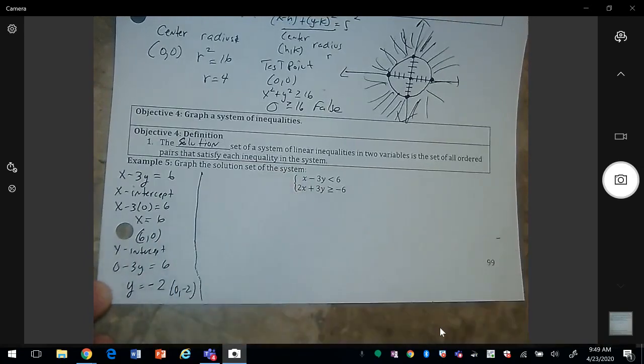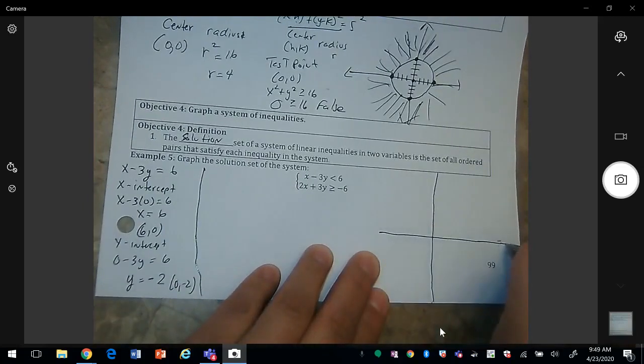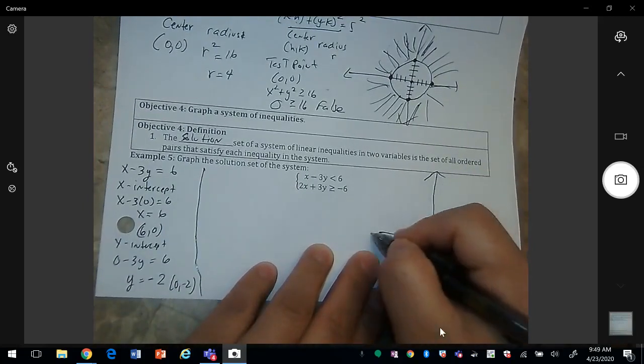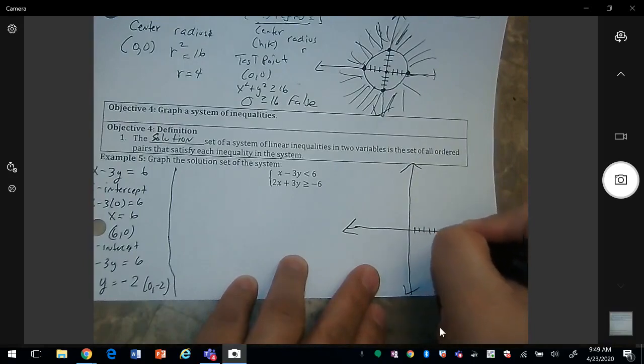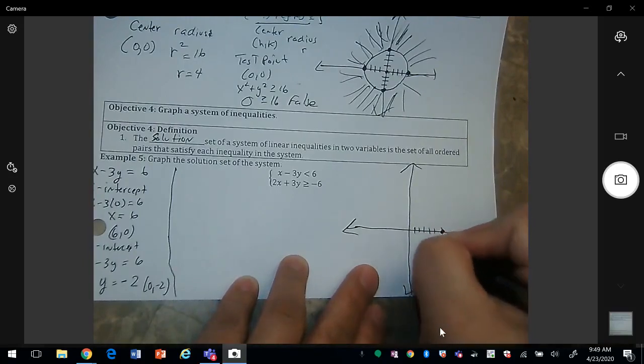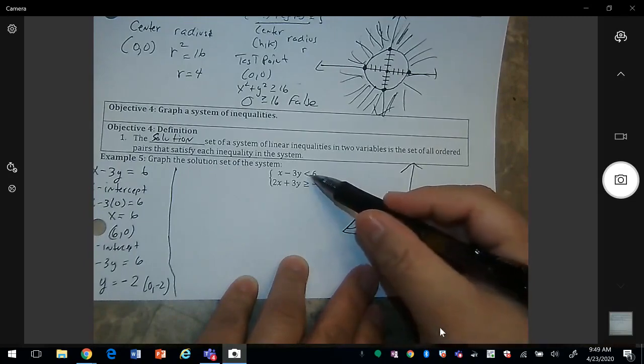So that's where my first line, and I'm going to go ahead and plot this line. So we have 6, 0, and 0, negative 2. It is a dotted line.